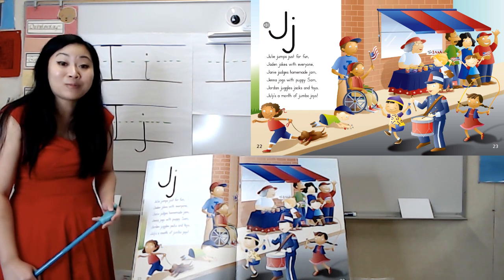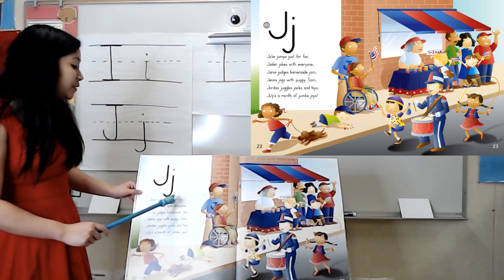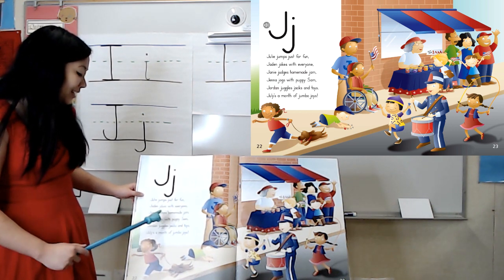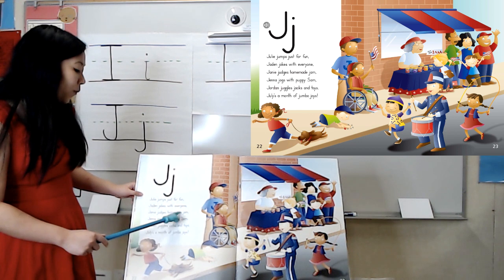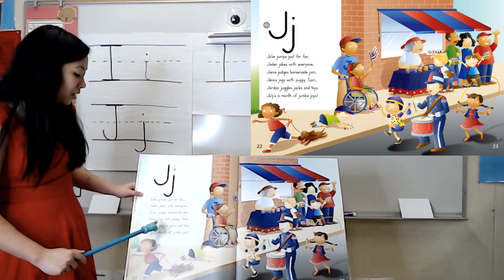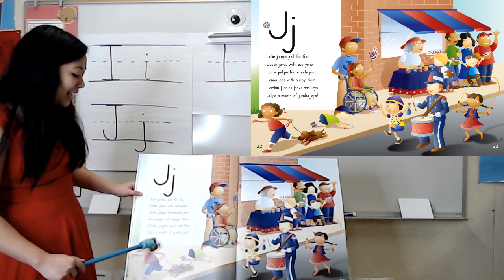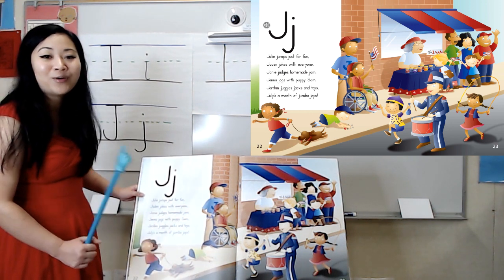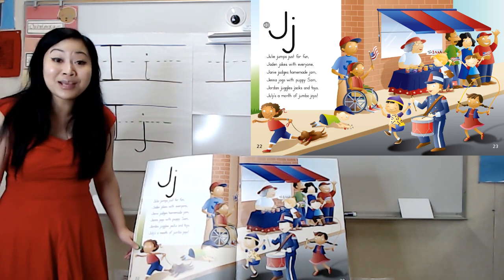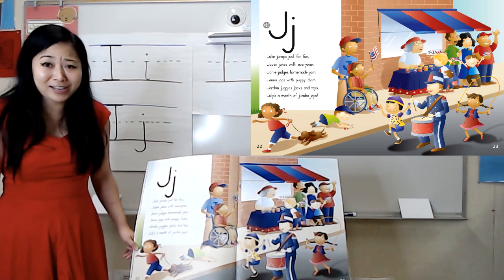Julie jumps just for fun. Jaden jokes with everyone. Jamie judges homemade jam. Jenna jogs with puppy Sam. Jordan juggles jacks and toys. July's a month of jumbo joys. Wow, there sure is a lot going on — July really is a month of jumbo joys and lots of really fun things.